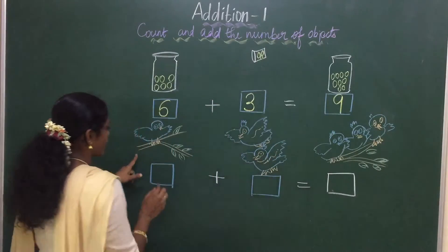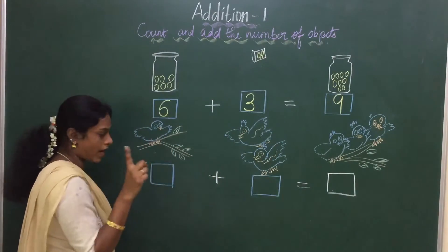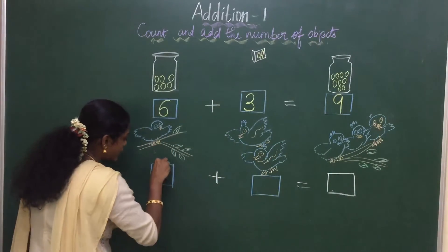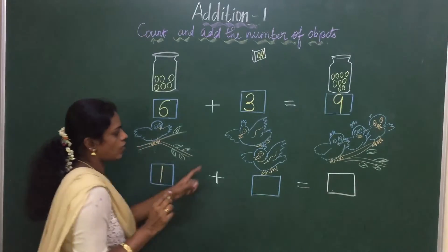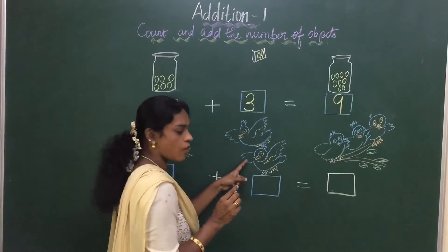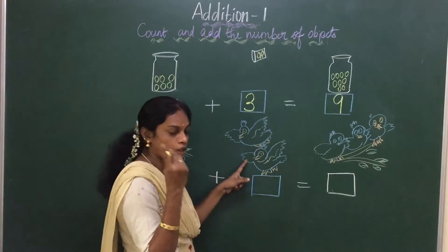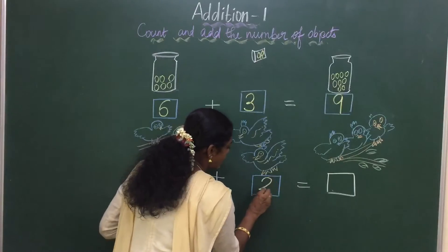Now come to the next one. How many marbles are there? 1. So right here, 1. Now count: 1, 2. How many marbles are there? 2 marbles. So right here, 2.